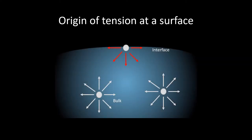Let us consider the origin of tension at a surface. We have two kinds of molecules: the fluid molecule at the bulk, and the fluid molecule which resides at the interface between the fluid and the gas phase. When the molecule is at the bulk, it experiences attraction from other fluid molecules from all sides, and hence we can say that a fluid molecule in the bulk is in equilibrium.